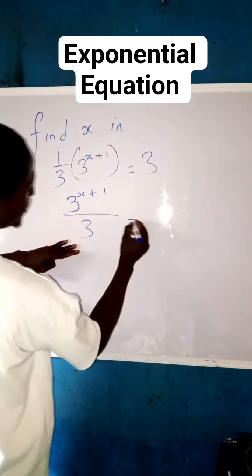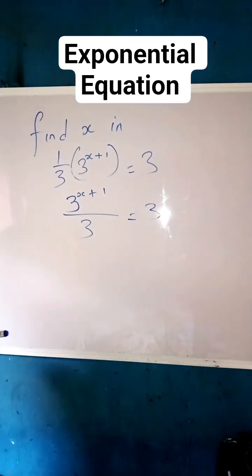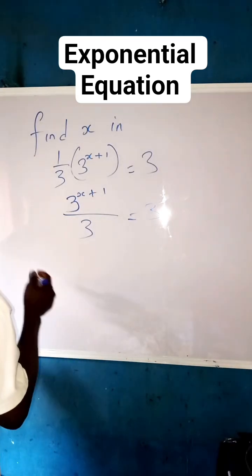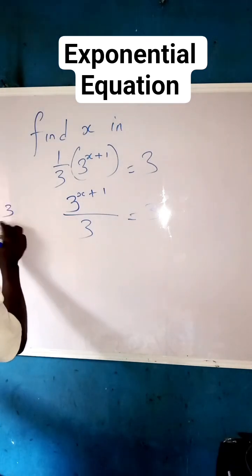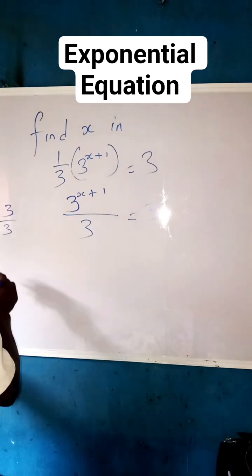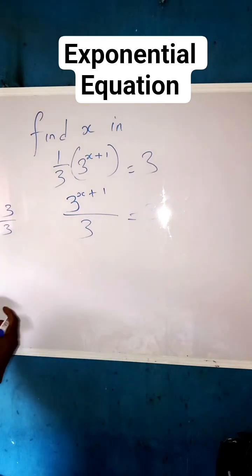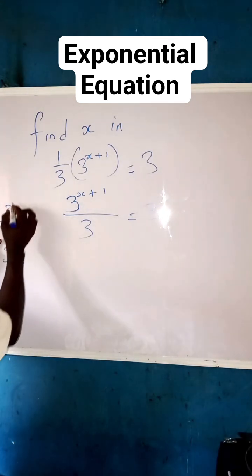This equals to three. Now what we are going to apply is a law of indices, which is: whenever we are having the same base or the same number, they can subtract each other. Just pick one of them, then the powers subtract.